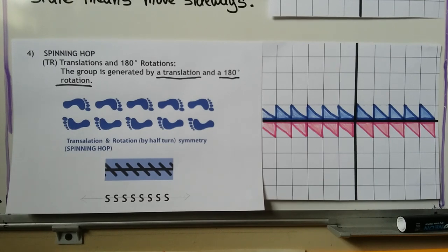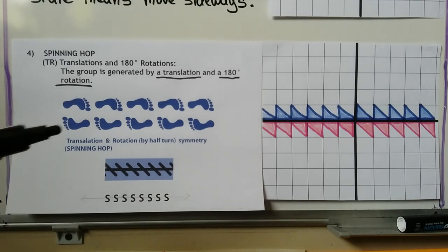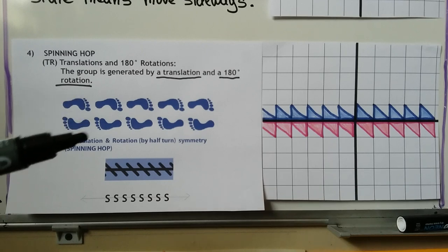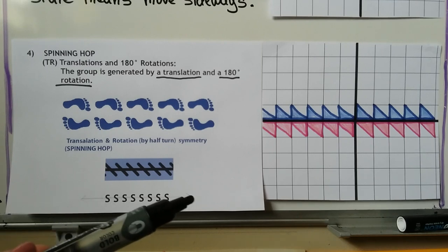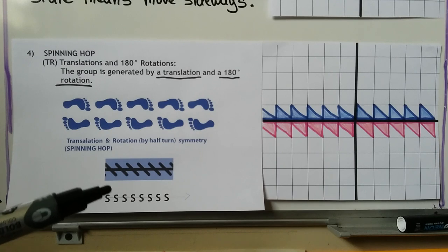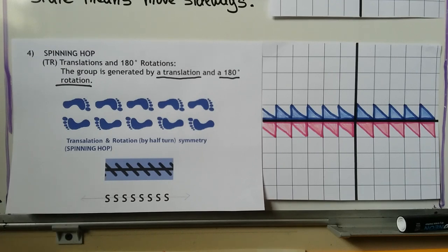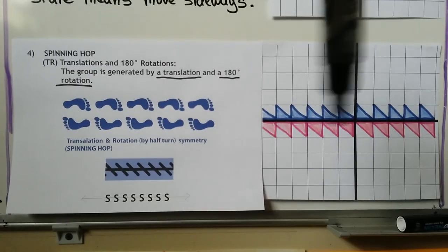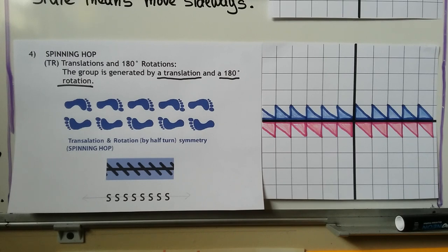Our fourth category is a spinning hop. We have translations and 180-degree rotations, and this group is generated by a translation and a 180-degree rotation. The toes are pointing to the right and the arch reflects across but also rotates 180 degrees, so now the toes are pointing to the left. We could take the letter S with a line of reflection and see that it both reflects and does a 180-degree rotation. Some are made red so you can see the difference of what's happening when it translates and rotates.